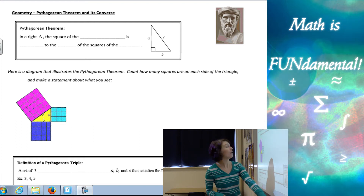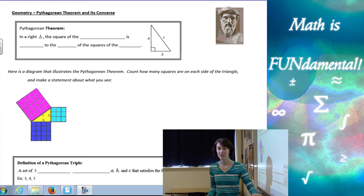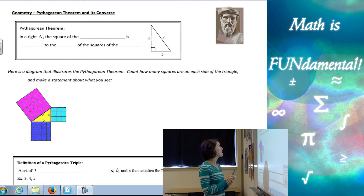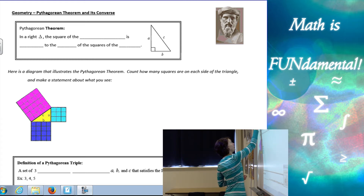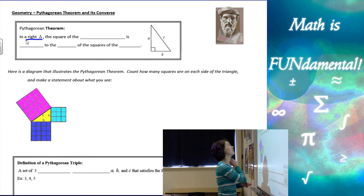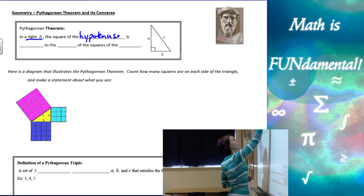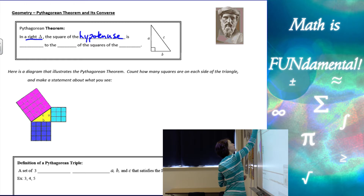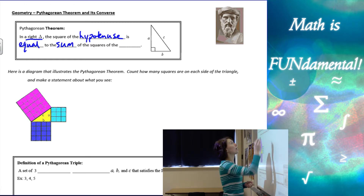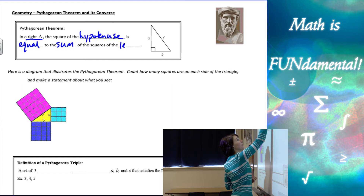Let's start off with a definition for the Pythagorean Theorem. It says: in a right triangle — it only works for right triangles — the square of the hypotenuse is equal to the sum of the squares of the legs.